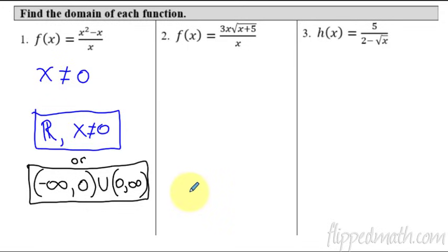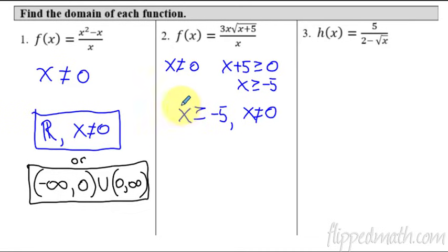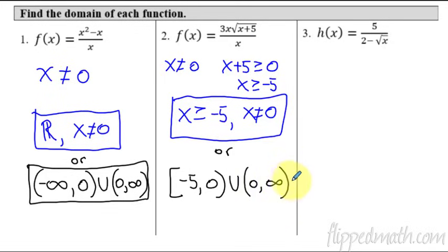This next example has two things going on. First, we have a denominator, so it's not allowed to be zero. Then we have a radical — whatever's underneath can be zero but not negative, so it must be greater than or equal to zero, giving x is greater than or equal to negative five. Our answer is x is greater than or equal to negative five but not equal to zero. In interval notation, that's a bracket at negative five up to zero with a parenthesis, union from zero to infinity. We never include infinity, so it's always a parenthesis there.